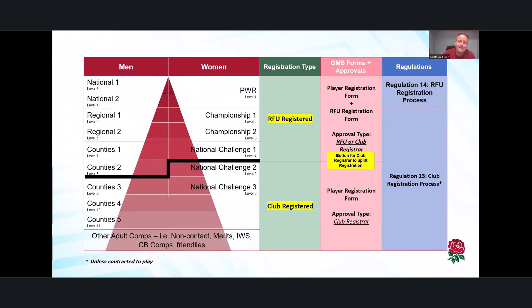If you've got players only needing to be eligible at the levels below the black staggered line — that's National Challenge Two, level five in the women's game, and Counties Three, level nine and below in the men's game — including merit leagues, merit tables, CB Cup competitions, friendlies, and the Inner Warrior series for women, then club registration is the maximum those players need. If the highest a player will play is County Three level nine, club registration is all that's required.